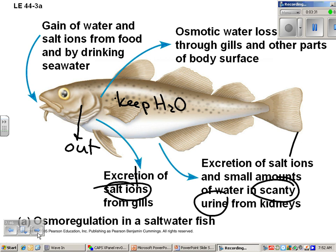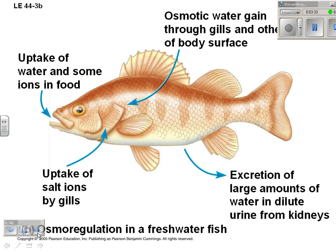By contrast, a freshwater fish doesn't have that problem. In fact, they need to get salt, and so they get it through their gills — kind of the opposite. They produce large amounts of urine because they're in a situation where they will gain too much water. Their cells will gain too much water, so they have to constantly get rid of it.